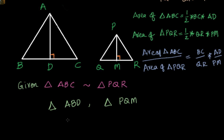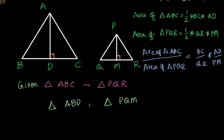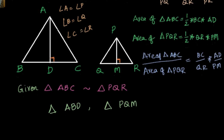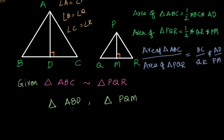You can see that in these two triangles, angle B equals angle Q, because we know that already. When we said similar triangles, we also said that angle A equals angle P, angle B equals angle Q, and angle C equals angle R. Because if two triangles are similar, their sides are in proportion and the corresponding angles are equal. So if you consider triangle ABD and triangle PQM, you know that angle B equals angle Q — because triangle ABC and triangle PQR are similar — so these are corresponding angles of similar triangles.